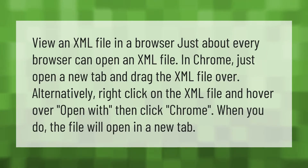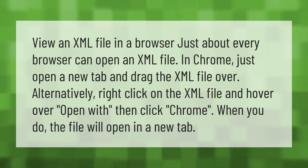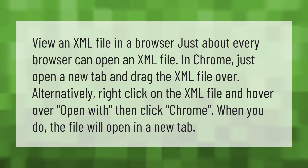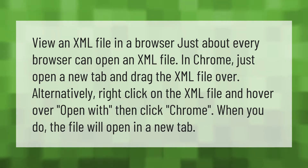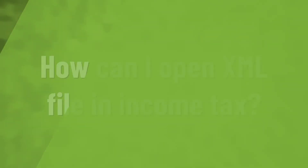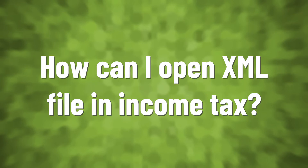View an XML file in a browser — just about every browser can open an XML file. In Chrome, open a new tab and drag the XML file over. Alternatively, right-click on the XML file, hover over 'Open With', and then click Chrome. When you do, the file will open in a new tab.